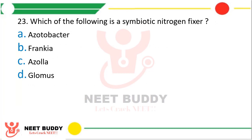Question number 23. Which of the following is a symbiotic nitrogen fixer? Azotobacter, Frankia, Azolla, or Glomus? The correct answer is option B — Frankia.